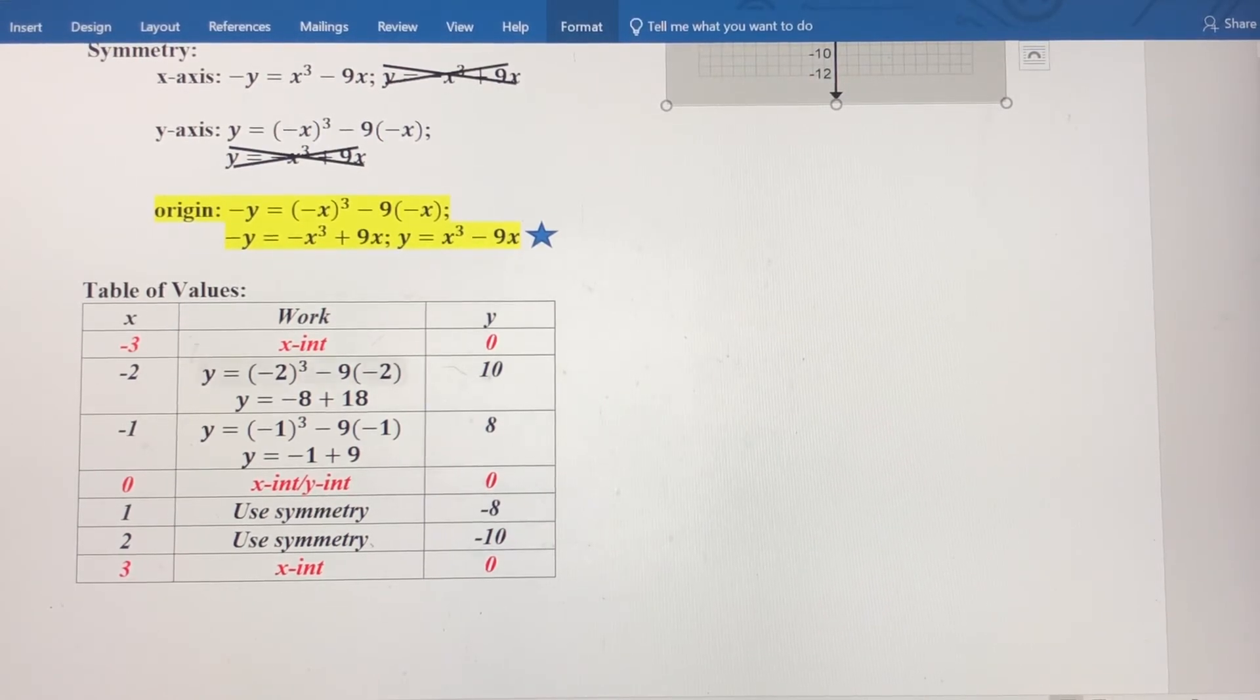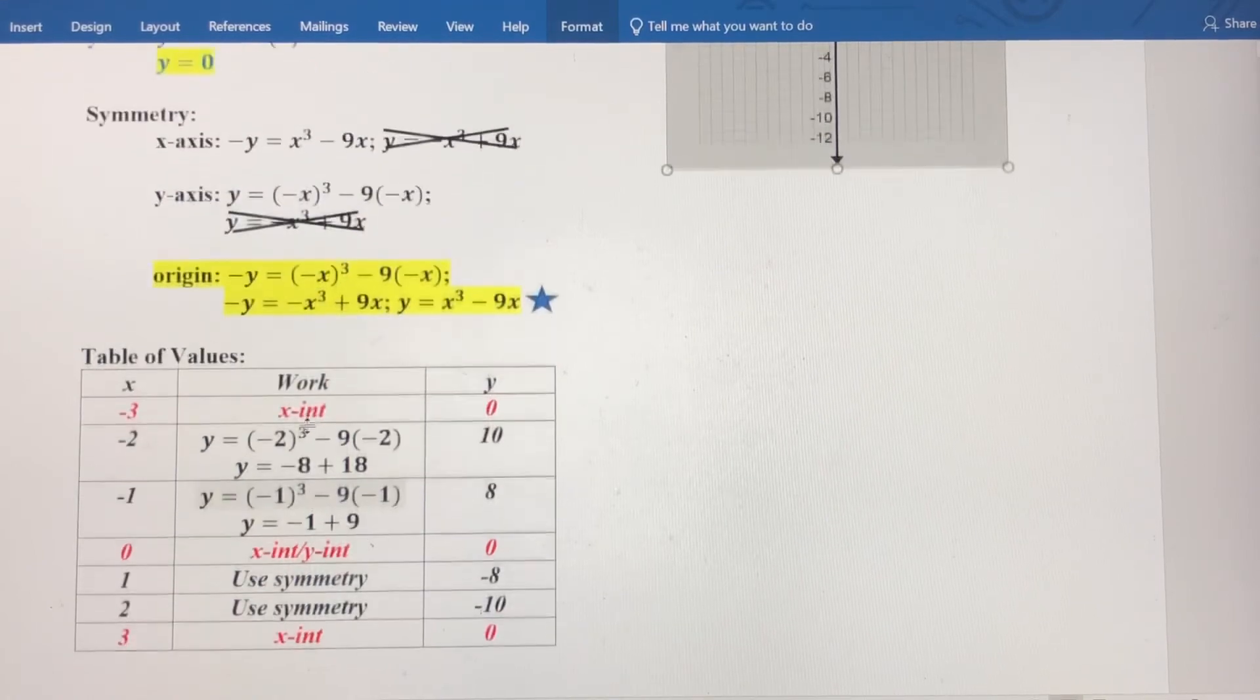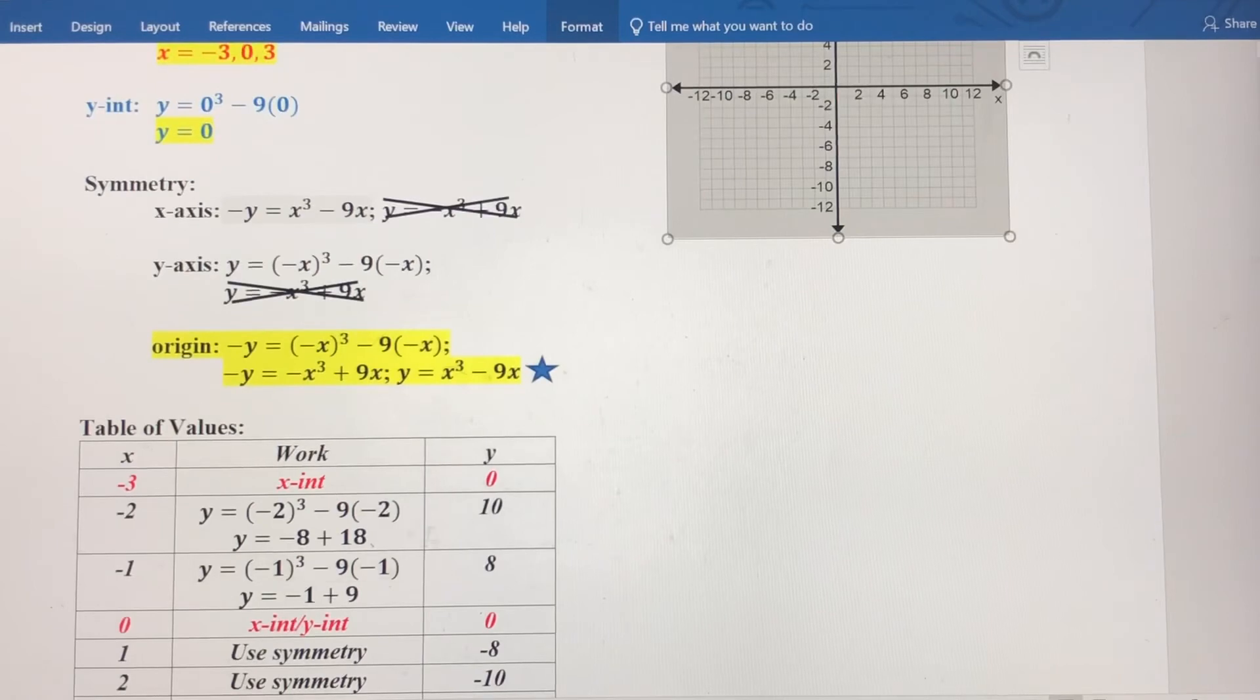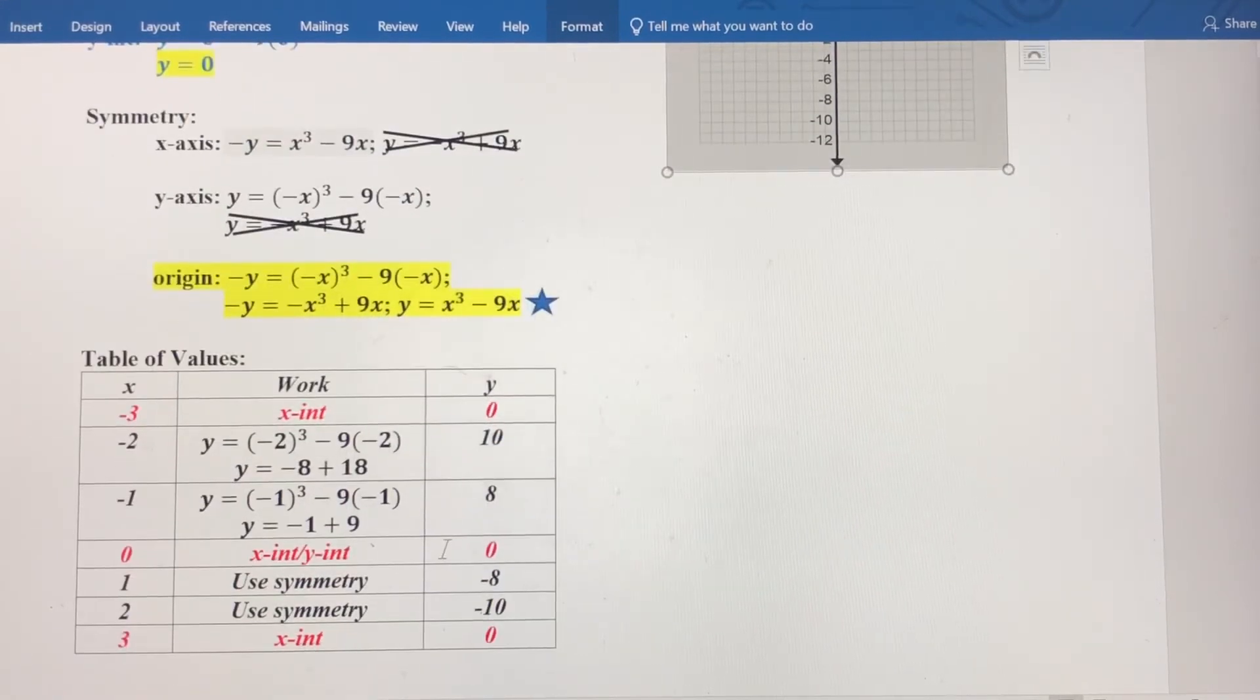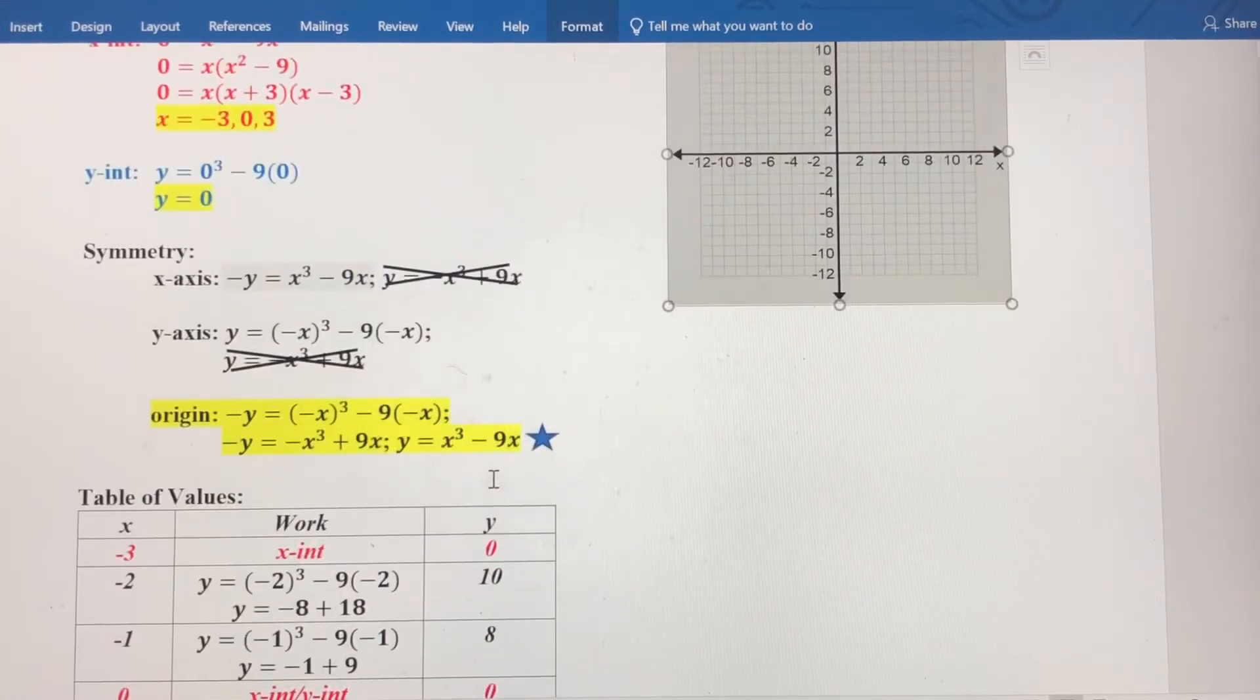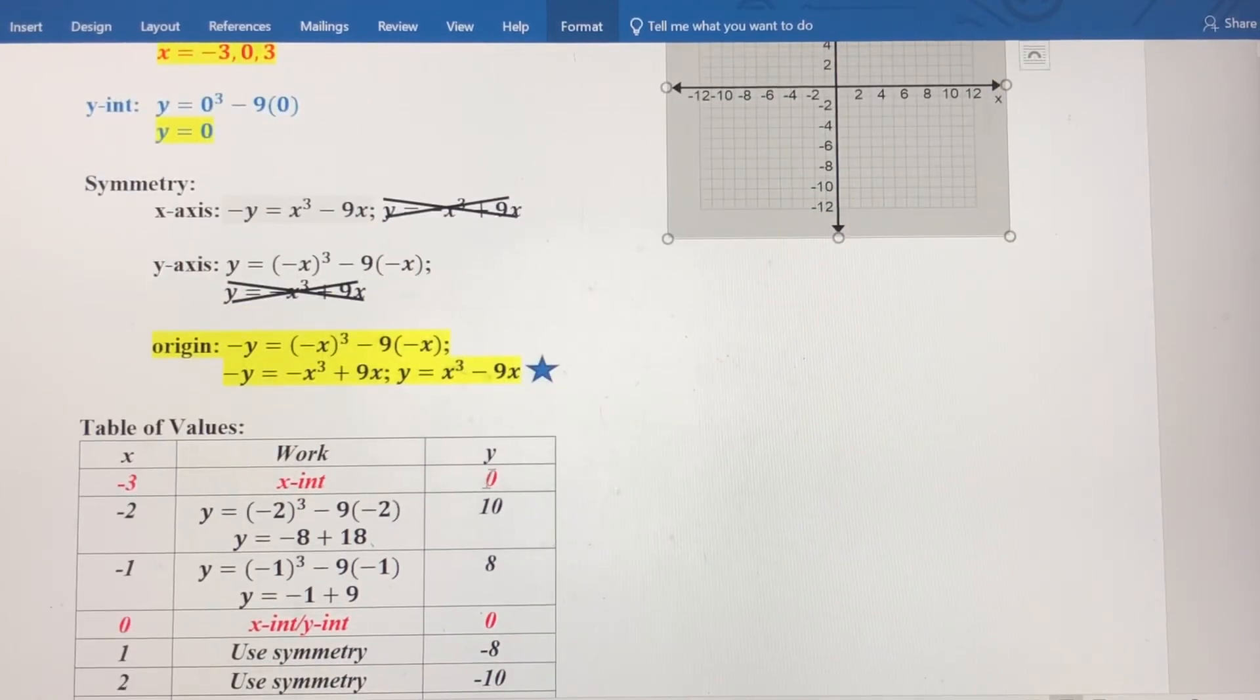So this table of values is going to allow us to graph this equation, y equals x cubed minus 9x. It's not going to be exact because there's some other things in here that we're going to have to go over later on, but this table of values is going to give us a really good representation of what the graph of this equation looks like. So let's go plot these points and look at the graph.